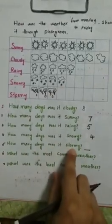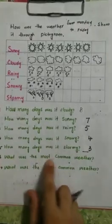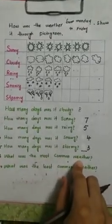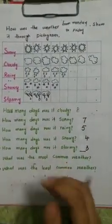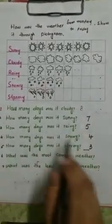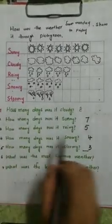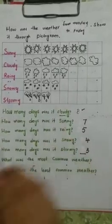How many days was it stormy? Counting: 1, 2, 3 — 3 days was stormy. Now what was the most common weather? You can count it from here and also take information from here. Most common means mostly used. Most common is which digit is biggest here? 8 — 8 is cloudy. Yes, cloudy is the most common weather here.